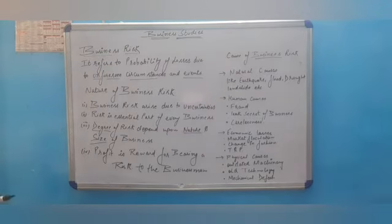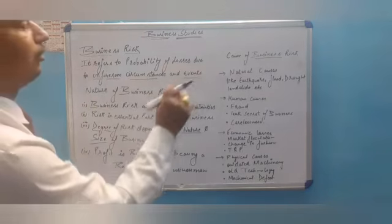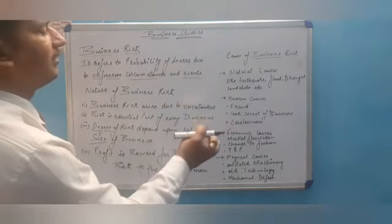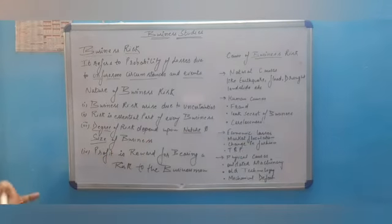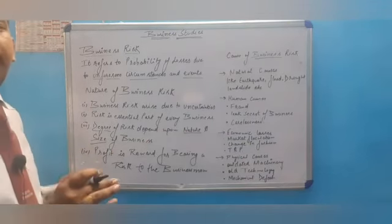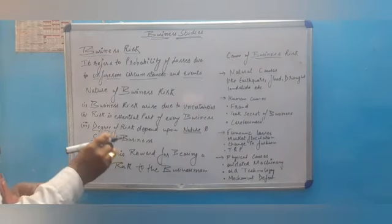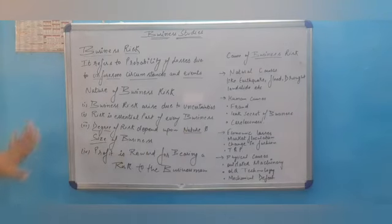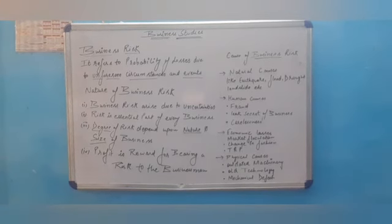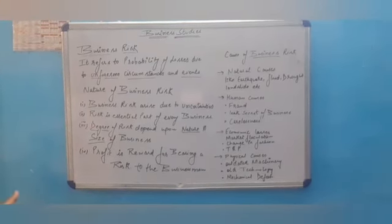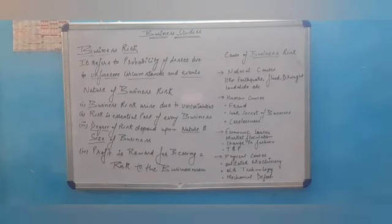So these are the four kinds of causes: natural causes, human causes, economic causes, and physical causes. I hope these four points and business risk are clear to you. Thank you everyone. Please like, share and subscribe the channel, and take a screenshot to help you remember the content better.